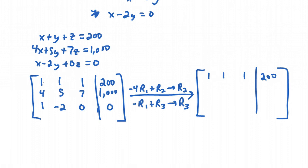What do we have in the second row? We do minus 4 times the top one plus the second one. Minus 4 times 1 is minus 4, plus 4 is 0. That's exactly what we wanted. Minus 4 times 1 is minus 4, plus 5 is 1. Minus 4 times 1 is minus 4, plus 7 would be 3. And minus 4 times 200 is minus 800, plus 1,000 would be 200. In the last row we want to do minus the top row plus the bottom row. Minus 1 plus 1, that would be 0. Minus 1 plus a minus 2, that would be minus 3. And minus 1 plus 0, that would be minus 1. Also minus 1 times 200, that would be minus 200, plus 0 is minus 200.